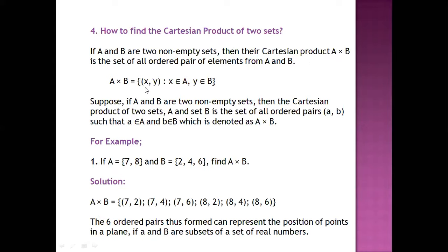So A cross B will be: {(X, Y) such that X belongs to A and Y belongs to B}. The first element of the ordered pair will belong to the first set and the second element will belong to the second set. So X ∈ A and Y ∈ B. This is the representation of Cartesian product.